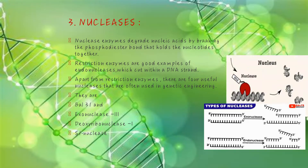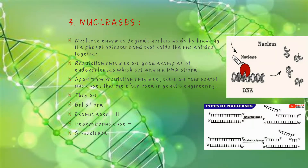Nucleases. Nuclease enzymes degrade nucleic acids by breaking the phosphodiester bond that holds the nucleotides together. Restriction enzymes are a good example of endonucleases which cut within a DNA strand. Apart from restriction enzymes, there are four useful nucleases often used in genetic engineering: BAL-31, exonuclease-3, deoxyribonuclease-1, and S1 nuclease.